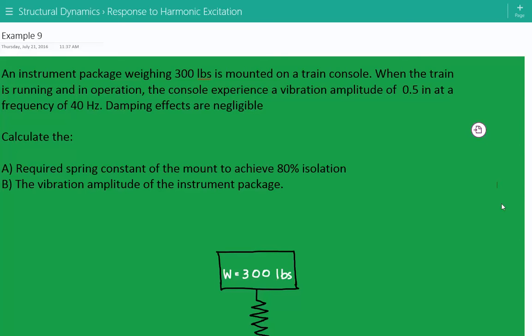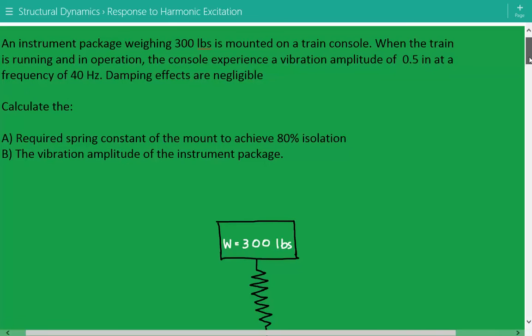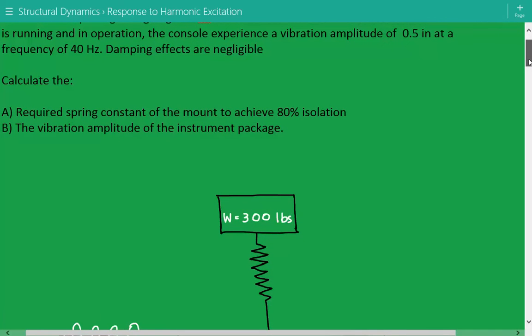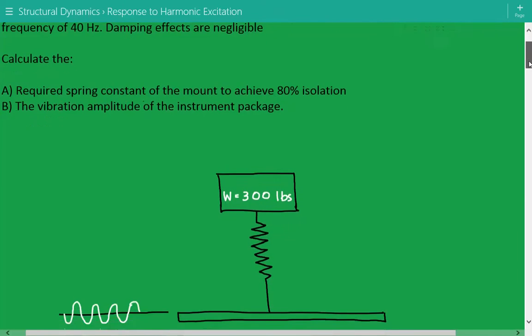Instrument package weighing 300 pounds is mounted on a train console, and when the train is running and in operation, the console experiences a vibration amplitude of 0.5 inches at a frequency of 40 Hertz, and damping effects are negligible.